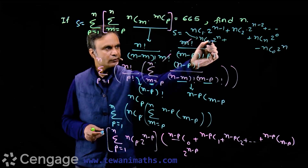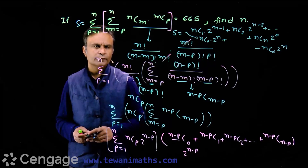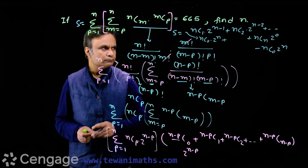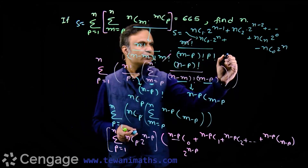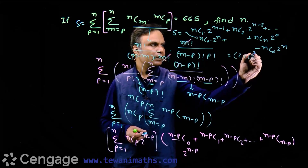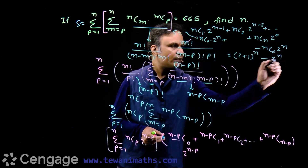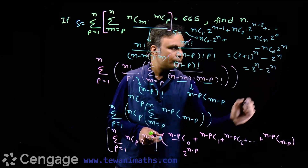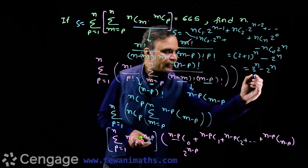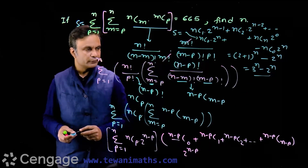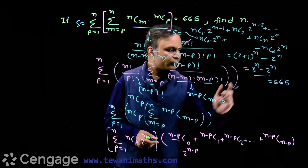From nC0 times 2 power n to nCn times 2 power 0, this is the binomial expansion of (2 plus 1) power n, which equals 3 power n. So S equals 3 power n minus 2 power n. This is given to be 665, and from this we have to find the value of n.